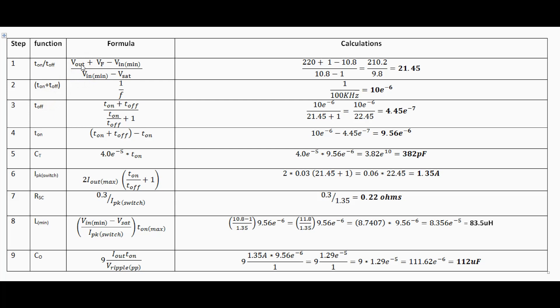Vout is the voltage that you want. Vf is the forward voltage of your rectifier diode. Vin is the minimum voltage that you're going to supply to the circuit and that's your decision that's up to you. The same as Vout.